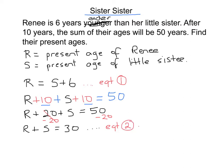Now some people get stuck here with two equations and wonder how to solve for R and S. We do that using substitution. Looking at equation two, we have R and S — can we substitute something in? From equation one we know R is the same as writing S plus 6. So instead of R in equation two, let's sub in S plus 6: S plus 6 plus S equals 30.